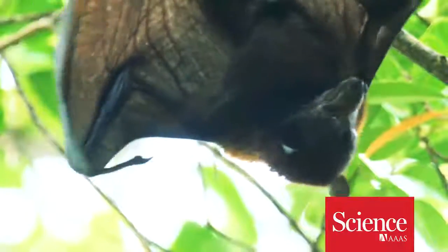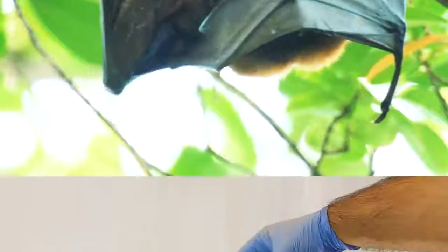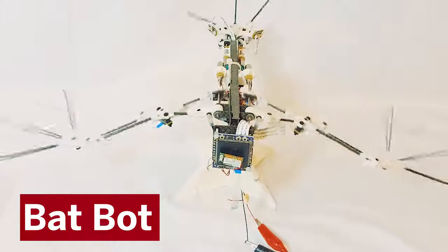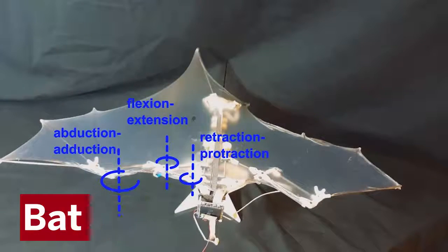In fact, bats have more than 40 joints in their wings. In order to capture this agility in a robot, researchers created BatBot, based on the most important joints in the bat wing.